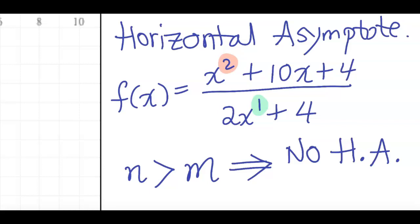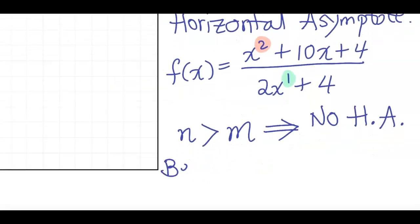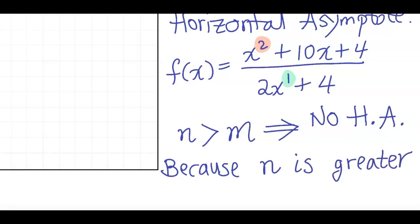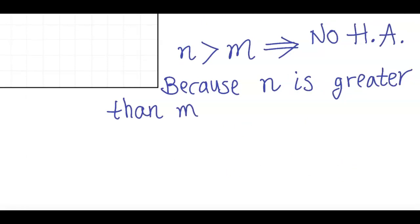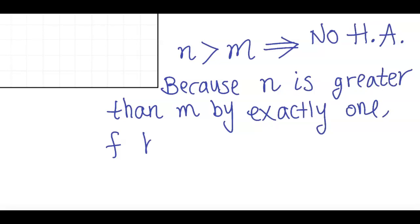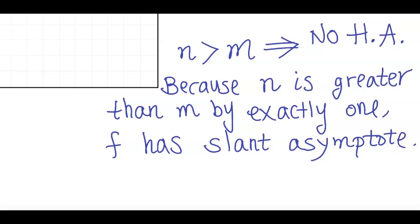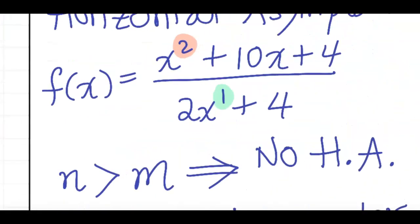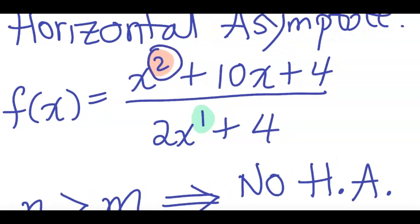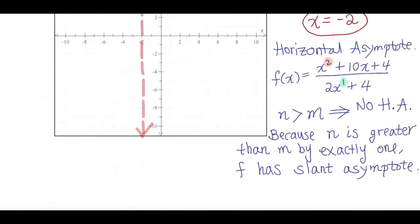When n is greater than m, this function has a slant asymptote. Notice the degree 2 is bigger than degree 1 by exactly one — when that happens, we get a slant asymptote. We will find it using long division. If I divide x² + 10x + 4 by 2x + 4...